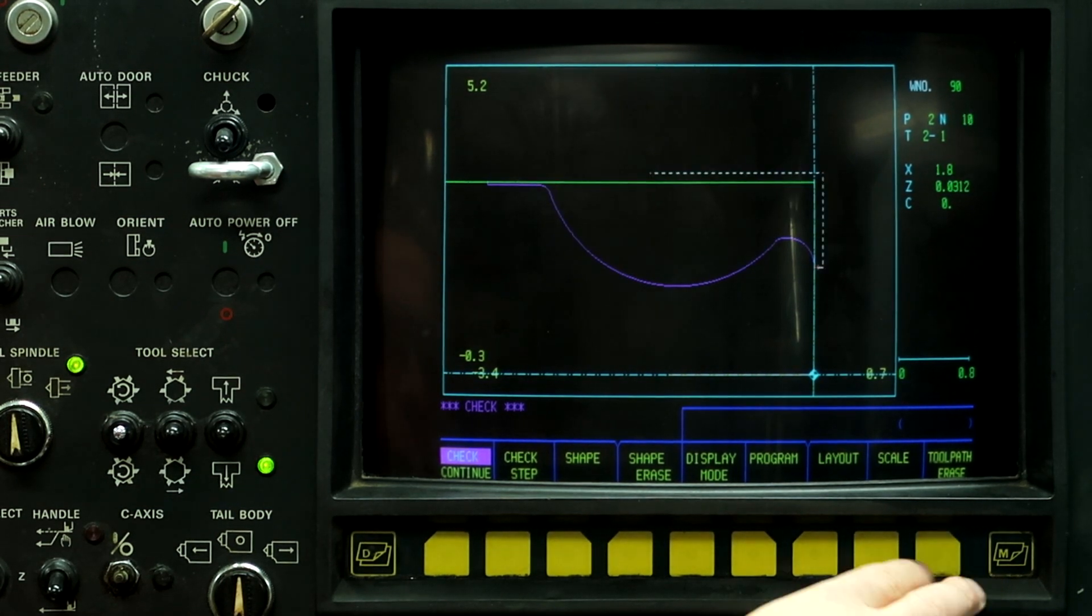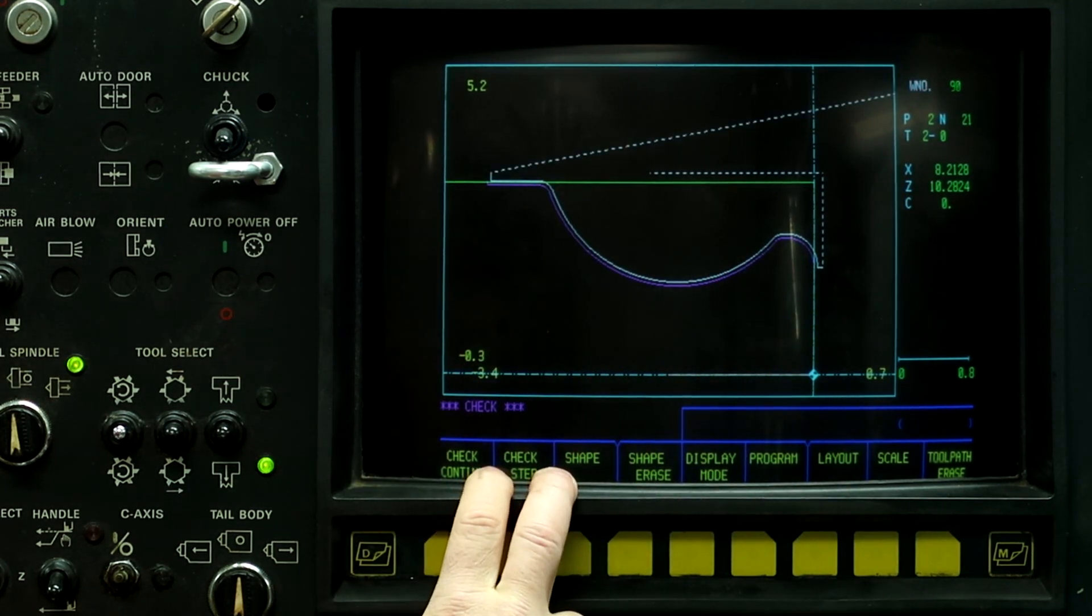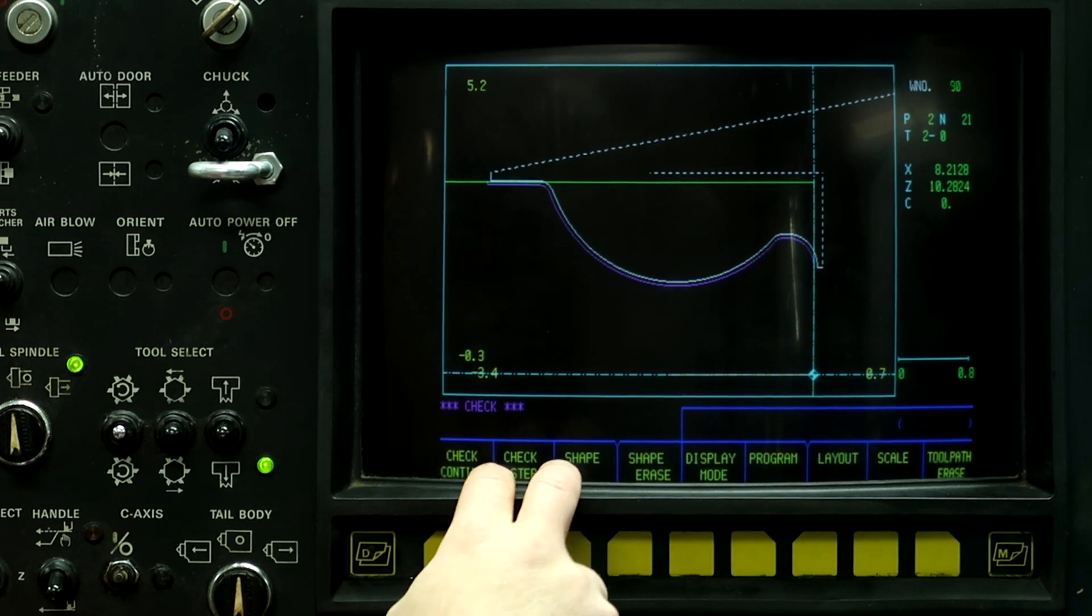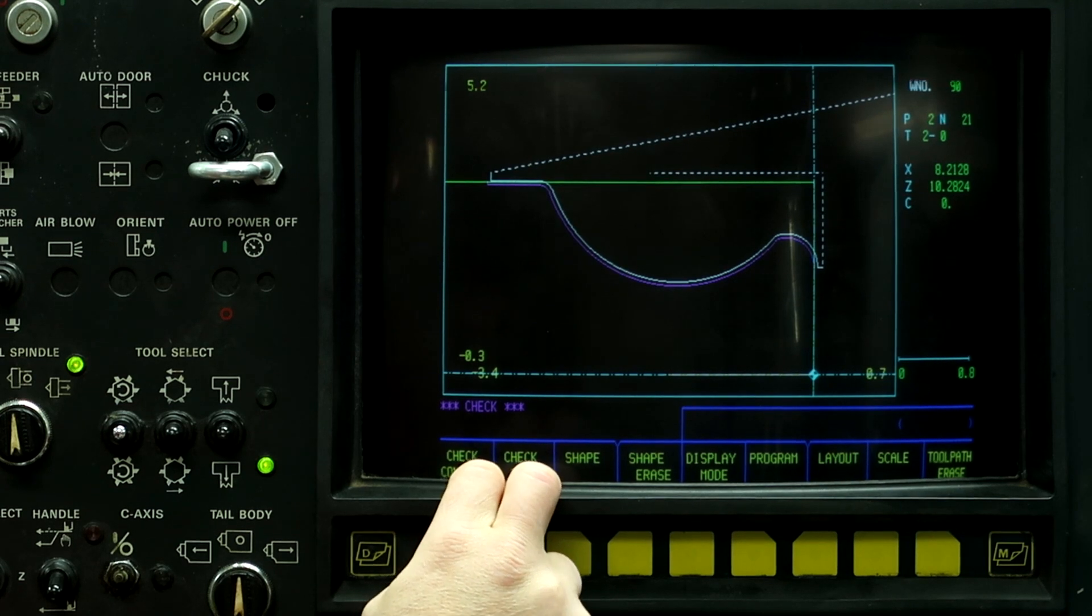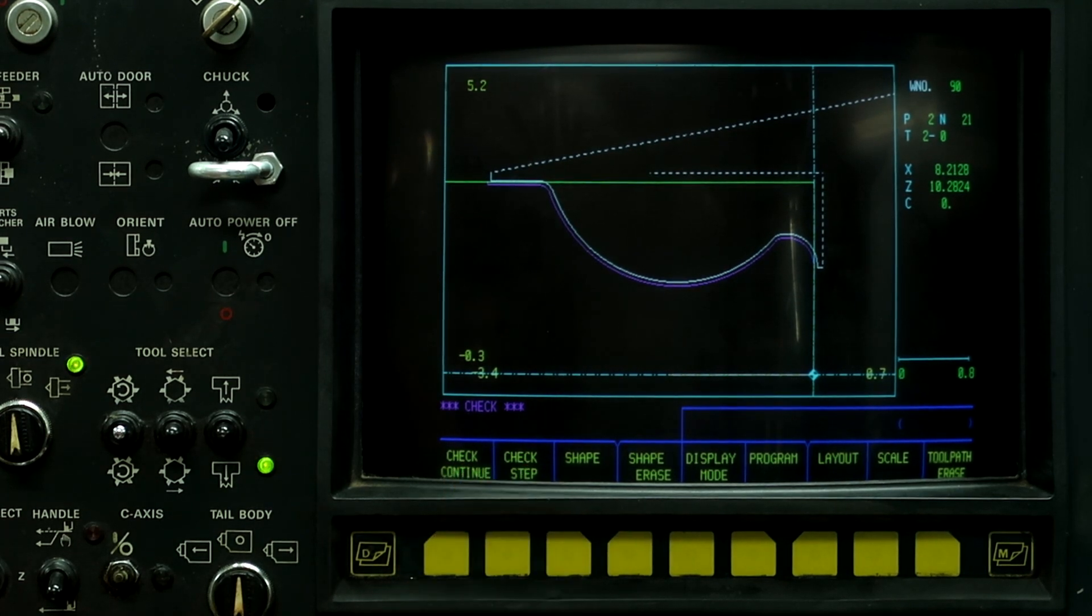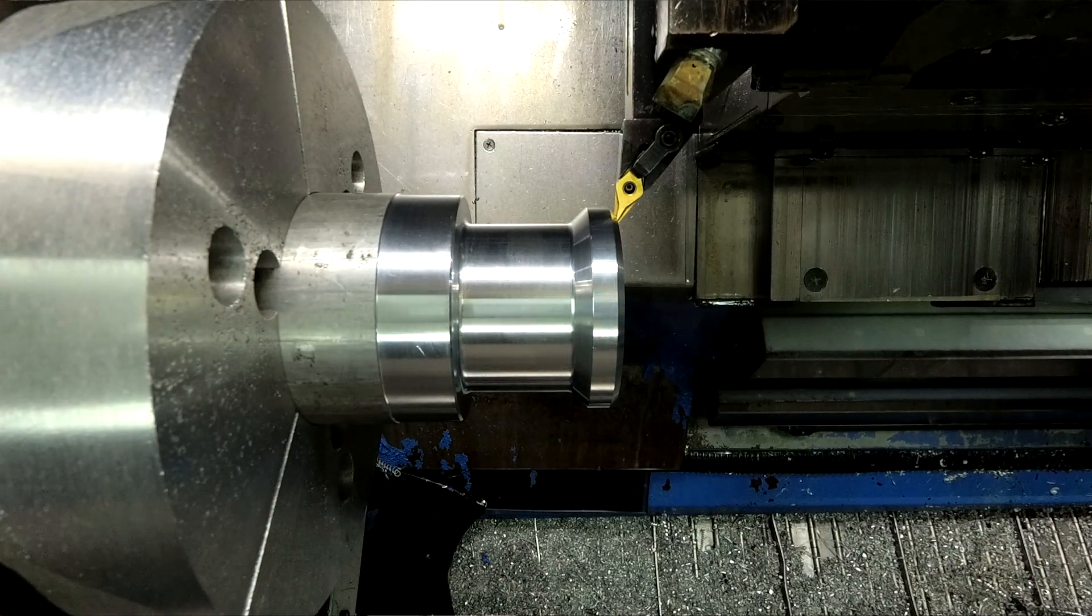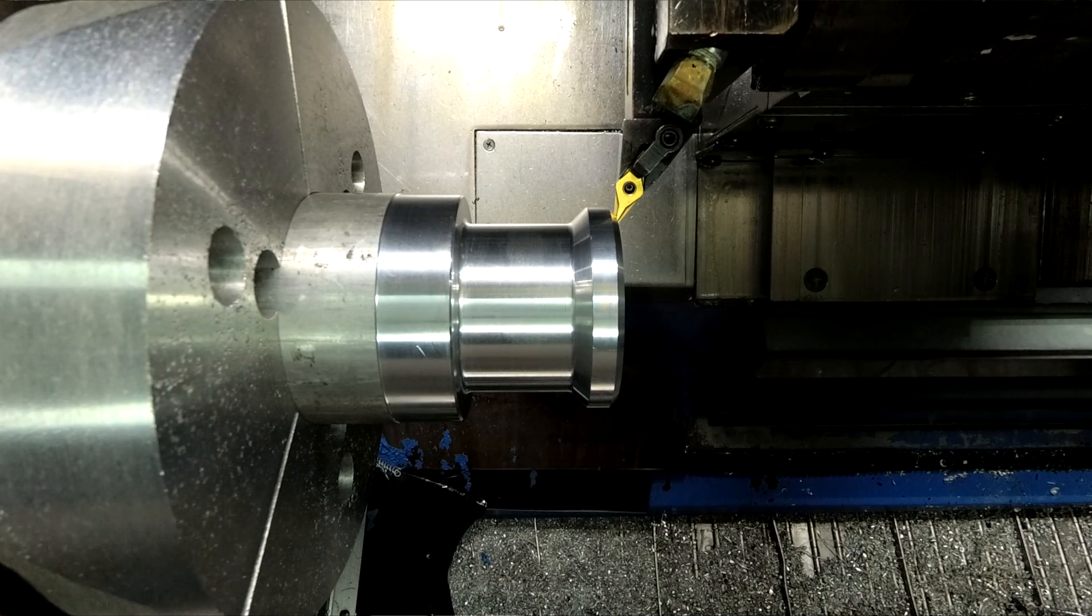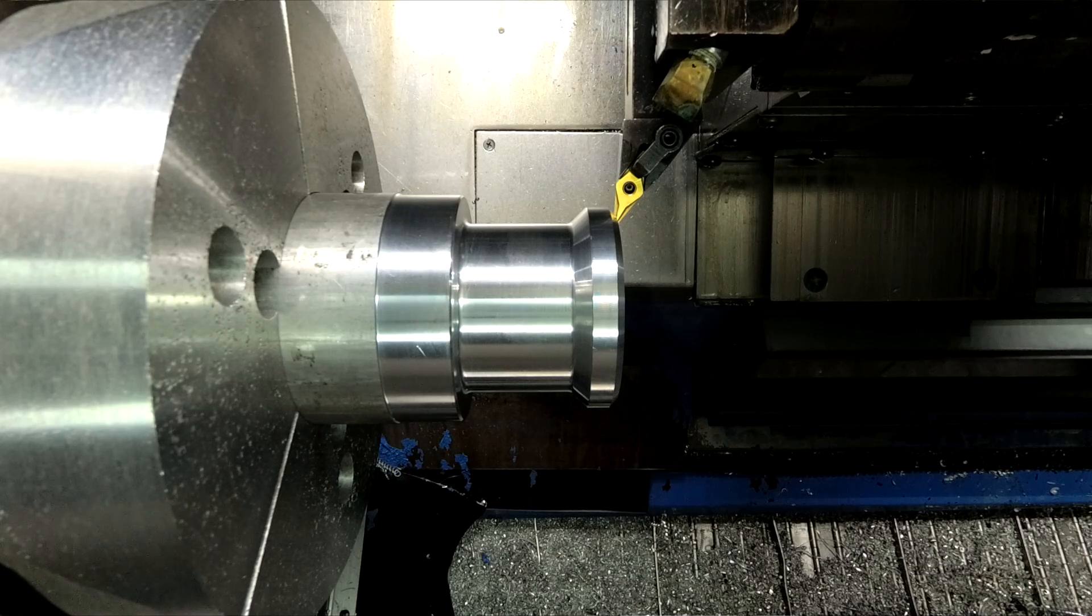So what we need to do now is set our work shift, call up the program, and hit cycle start. Alright, I just set the work shift and called up the program. So now we're ready to hit cycle start, and I'm going to run it without coolant so we can see what's happening.